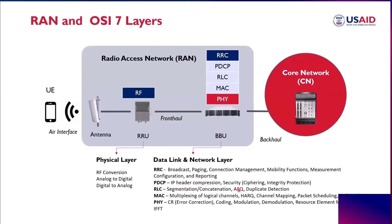The PDCP, or Packet Data Convergence Protocol, is responsible for IP header compression and security, including ciphering and integrity protection. After the PDCP and RRC, we go to the Radio Link Control protocol. Here, segmentation takes place — the headers coming from the PDCP are separated. For large data, we have concatenation or segmentation, automatic repeat request, and duplicate detection, all of which happen in the RLC.